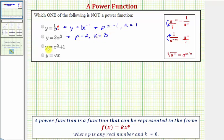Now the next function, we have y equals x squared plus one. Because of this plus one here on the end, this function is not a power function. The form of a power function does not allow the addition or subtraction of additional terms, or in this case, plus or minus a constant. So this is our function that's not a power function.